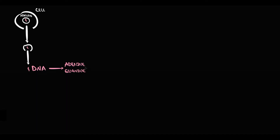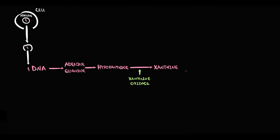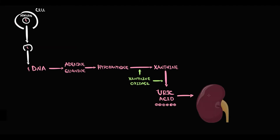Adenine and guanine undergo conversion to hypoxanthine, and hypoxanthine undergoes oxidation provided by the specific enzyme called xanthine oxidase. As a result, xanthine is produced. Then xanthine, again by xanthine oxidase, is converted into uric acid, which is then excreted by the kidneys into the urine.